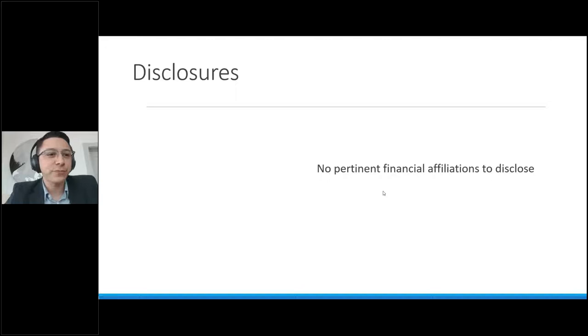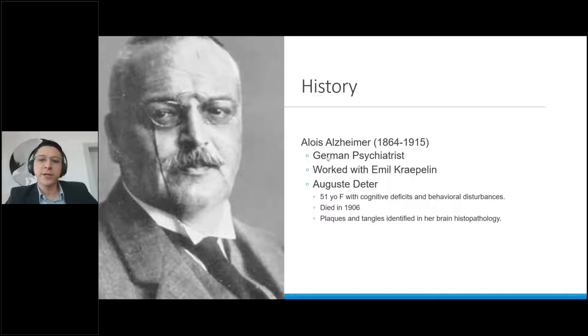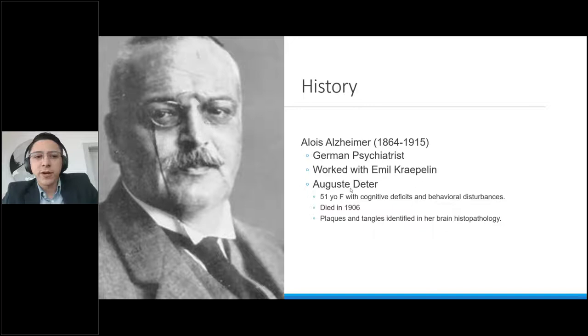All right. I have no pertinent financial affiliations, which I wish we could all disclose these in meetings, but there's nothing for me to disclose. A bit about the history. So this gentleman right here, renowned German psychiatrist by the name of Alois Alzheimer, he is the one, of course, credited with the description and discovery of Alzheimer's disease, worked with Emil Kraepelin, who is another German psychiatrist.